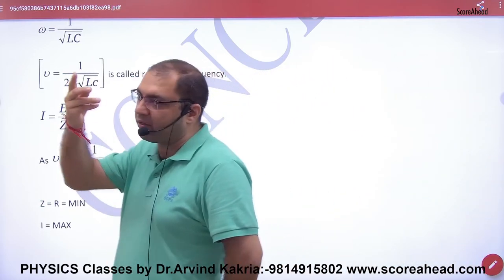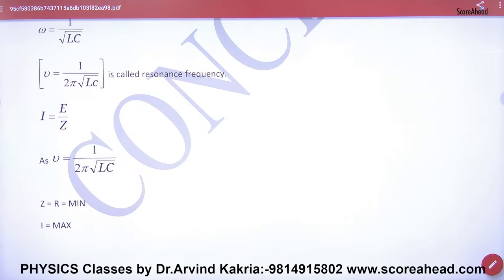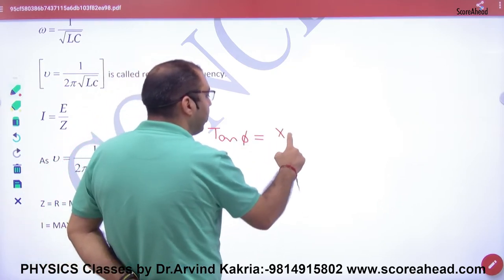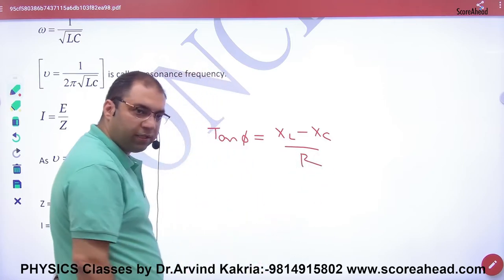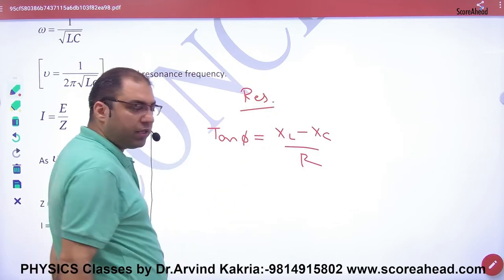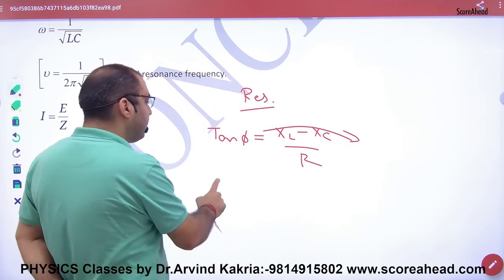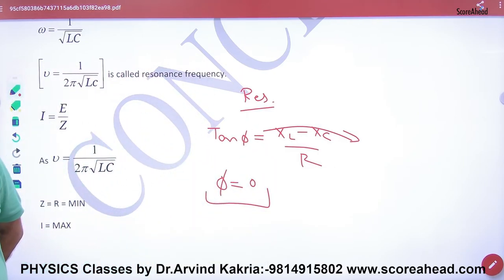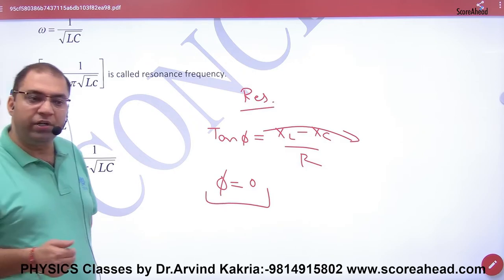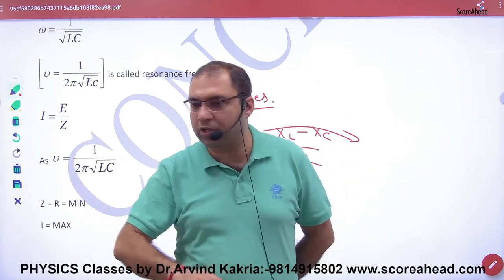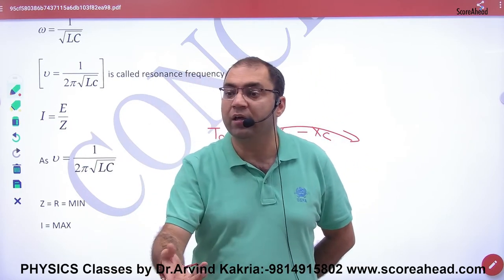In the LCR circuit, tan φ = (XL - XC)/R. When XL and XC cancel here, tan φ is automatically 0, so φ = 0. The voltage and current angle is 0.